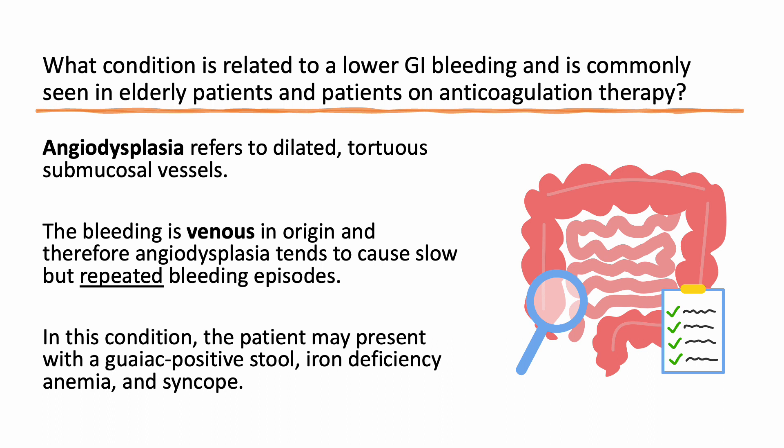What condition is related to a lower GI bleeding and is commonly seen in elderly patients and patients on anticoagulation therapy? This condition is called angiodysplasia. Angiodysplasia refers to dilated, tortuous submucosal vessels. The bleeding in this case is venous in origin, and therefore angiodysplasia tends to cause more of a slow but repeated bleeding episodes.